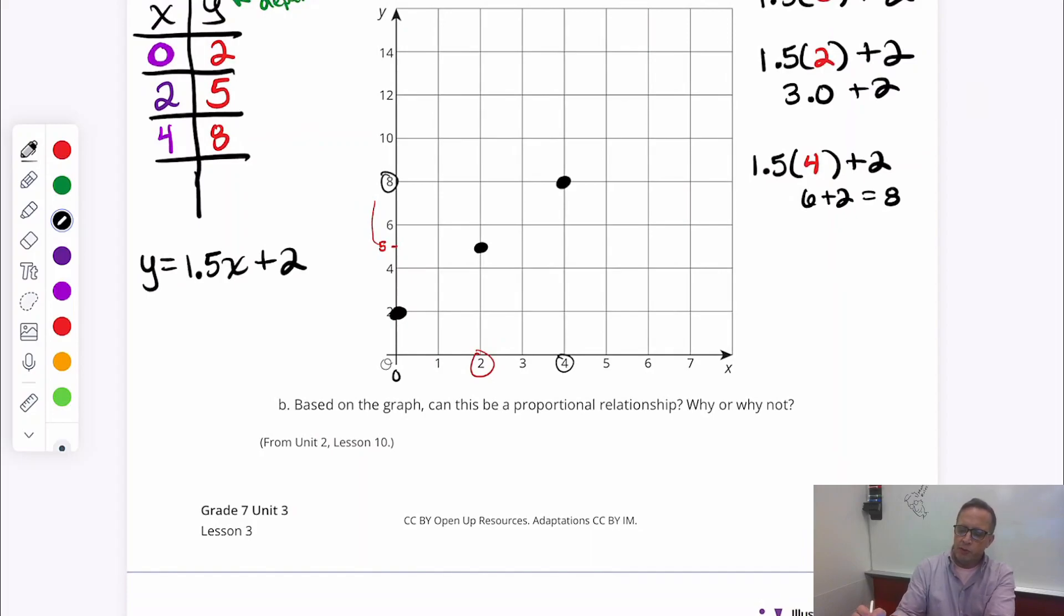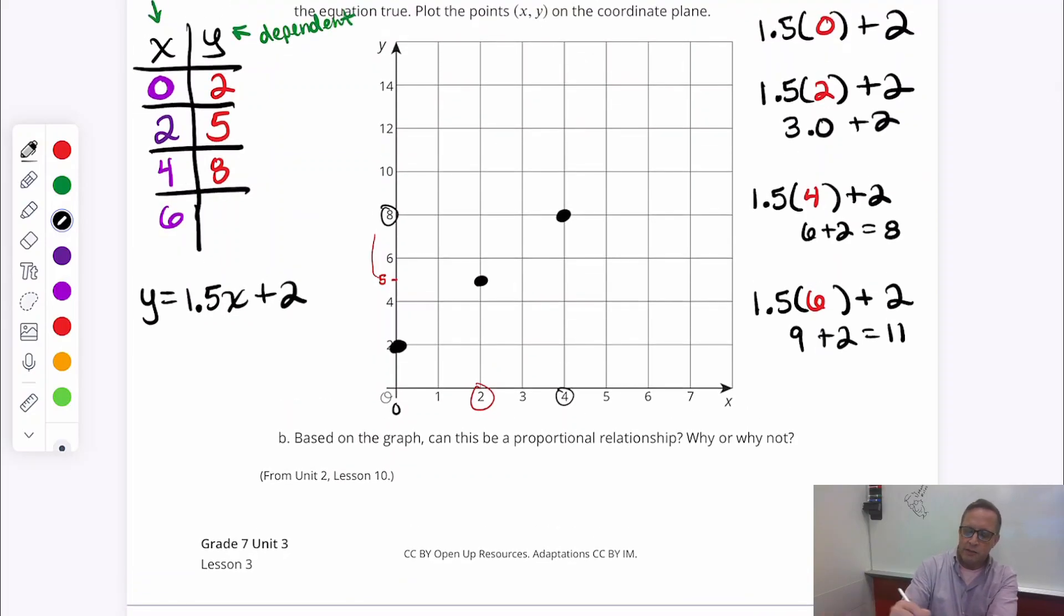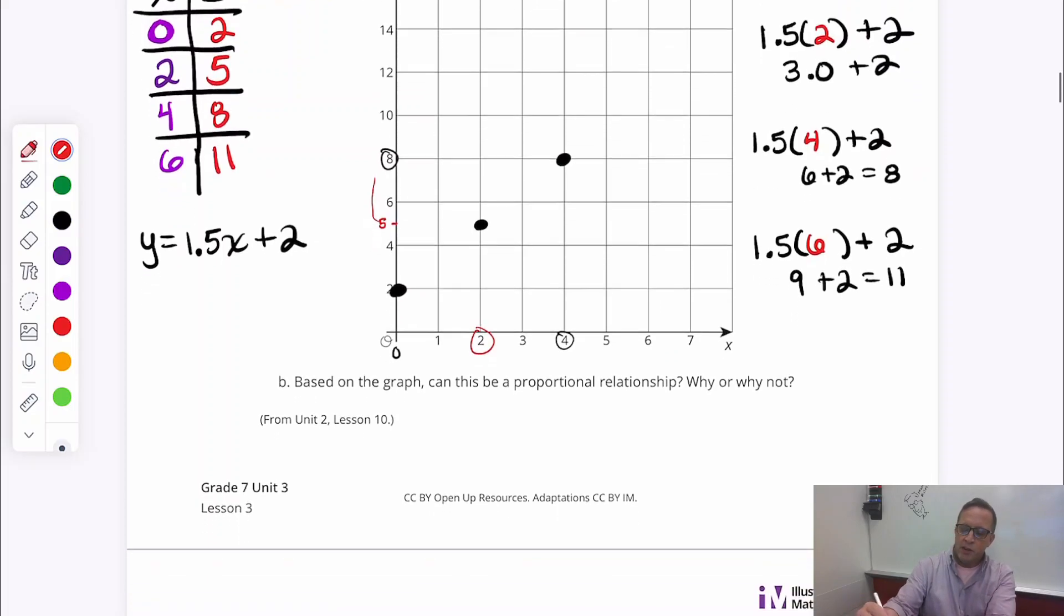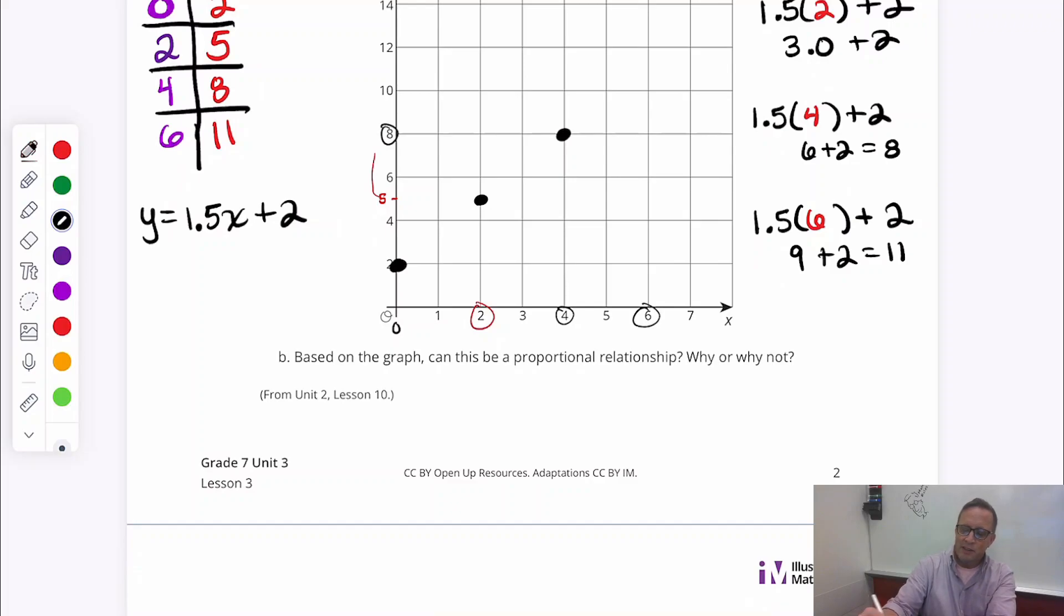And, we need one more pair. So, let's do six. Let's do six this time around. Let's use that as our independent variable. Our X. And, we're going to do 1.5 times six plus two. 1.5 times six. That is nine, isn't it? That is nine. And, so, nine plus two is 11. So, there we go. We've got six, 11. Six, 11. That's your last ordered pair right there. And, six, 11. That's going to be six on the X. And, 11 on the Y. So, 11 is going to be halfway between 10 and 12. So, that is right there. That's two, four, six, eight, 10, 11. So, I'm going to put a dot right there.